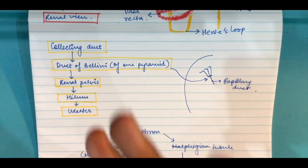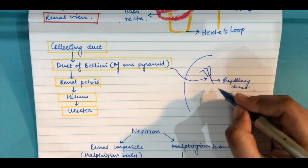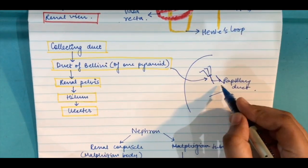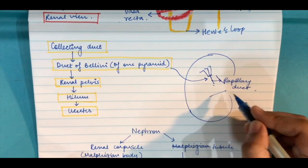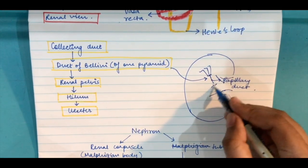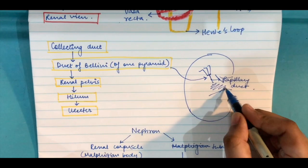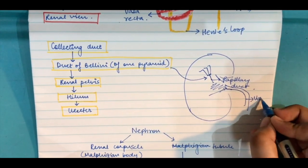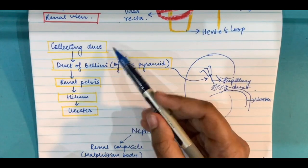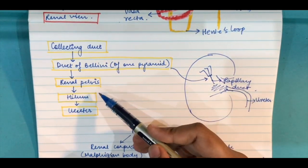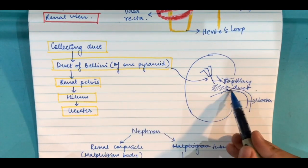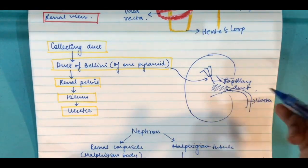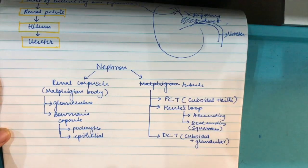Now papillary duct, it moves into the renal pelvis. We already learned that renal pelvis is where everything opens into. This entire thing is the renal pelvis. From renal pelvis it moves into the ureter. You can see here: collecting duct, duct of Bellini, renal pelvis, hilum - hilum is the region here where ureter enters the kidney and then it moves into the ureter.